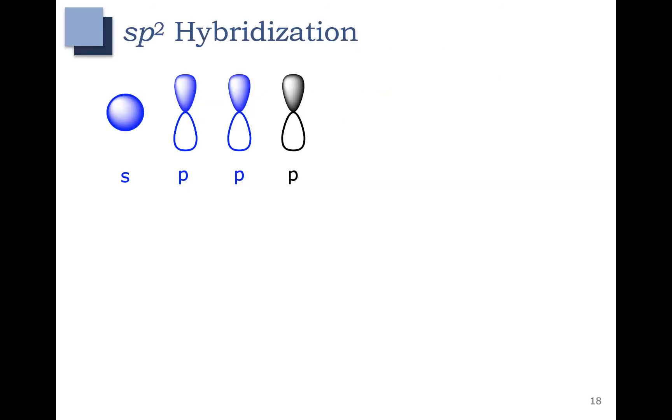In this video, we're going to cover sp2 hybridization of atomic orbitals. In sp3 hybridization for carbon, we took all of the orbitals that contained valence electrons for carbon and combined them all into four sp3 hybrid orbitals.